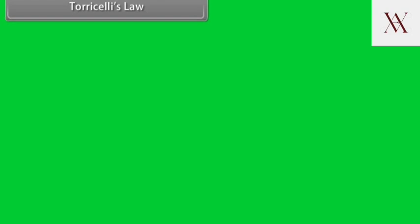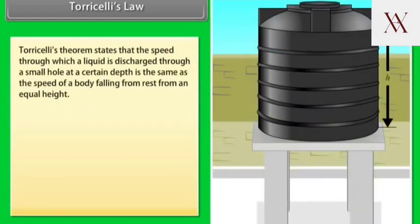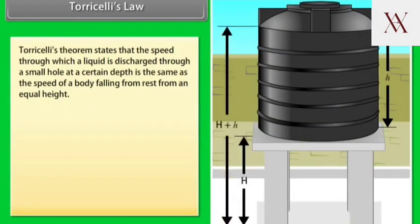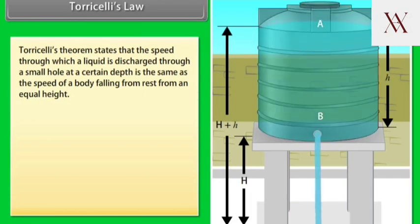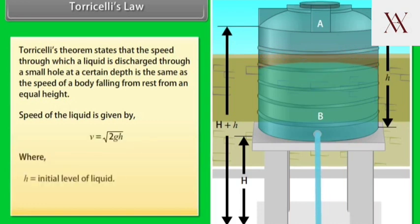Torricelli's theorem states that the speed through which a liquid is discharged through a small hole at a certain depth is the same as the speed of a body falling from rest from an equal height. Speed of the liquid is given by V equals square root of 2GH, where H equals initial level of liquid and G equals gravity constant.